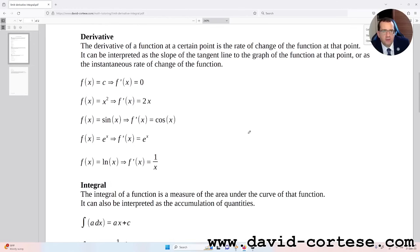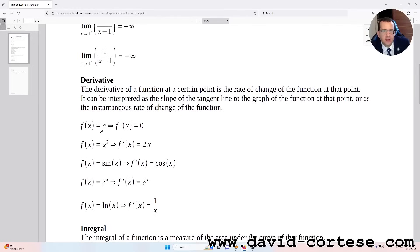f(x) equals c implies f'(x) equals 0. So the derivative of a constant is always 0. f(x) equals x squared implies f'(x) equals 2x.